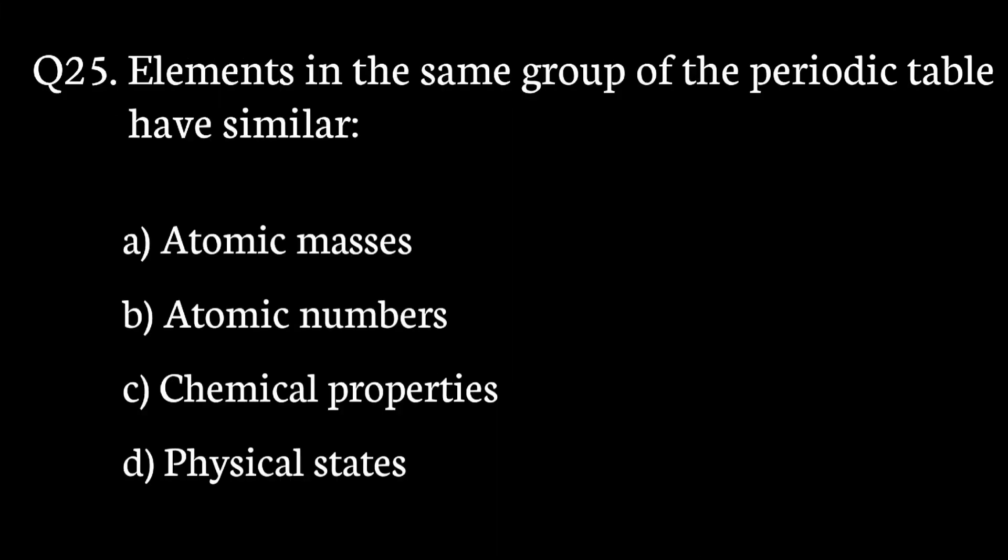Question number 25. Elements in the same group of the periodic table have similar? The correct answer to that question is option C. Chemical properties.